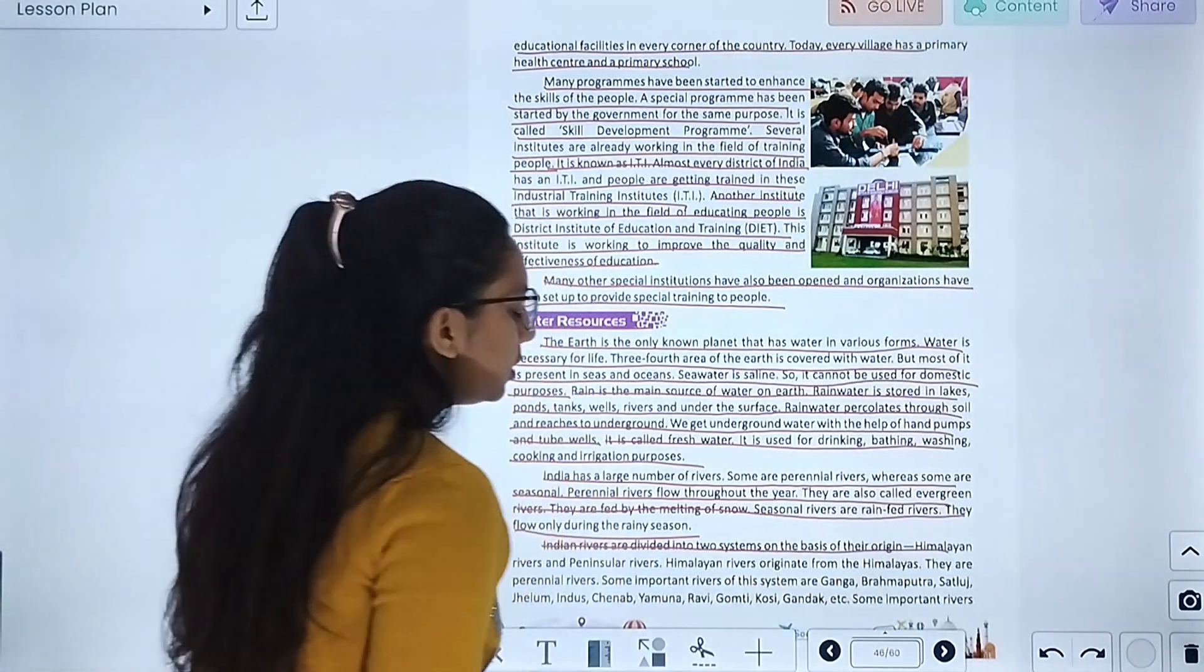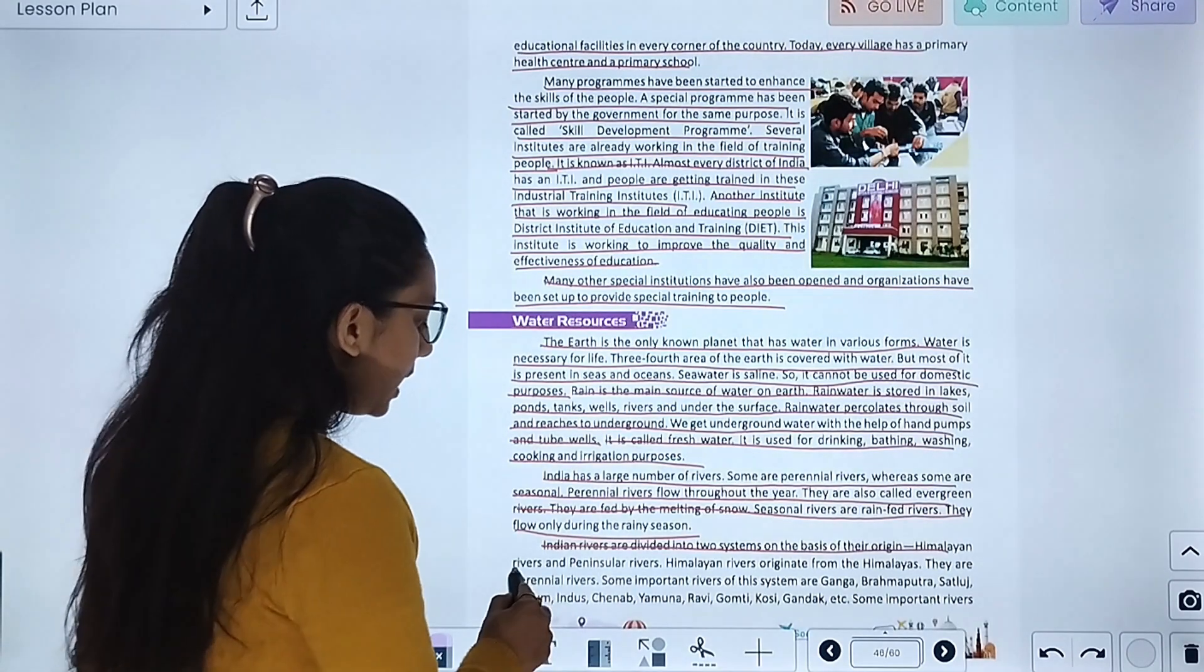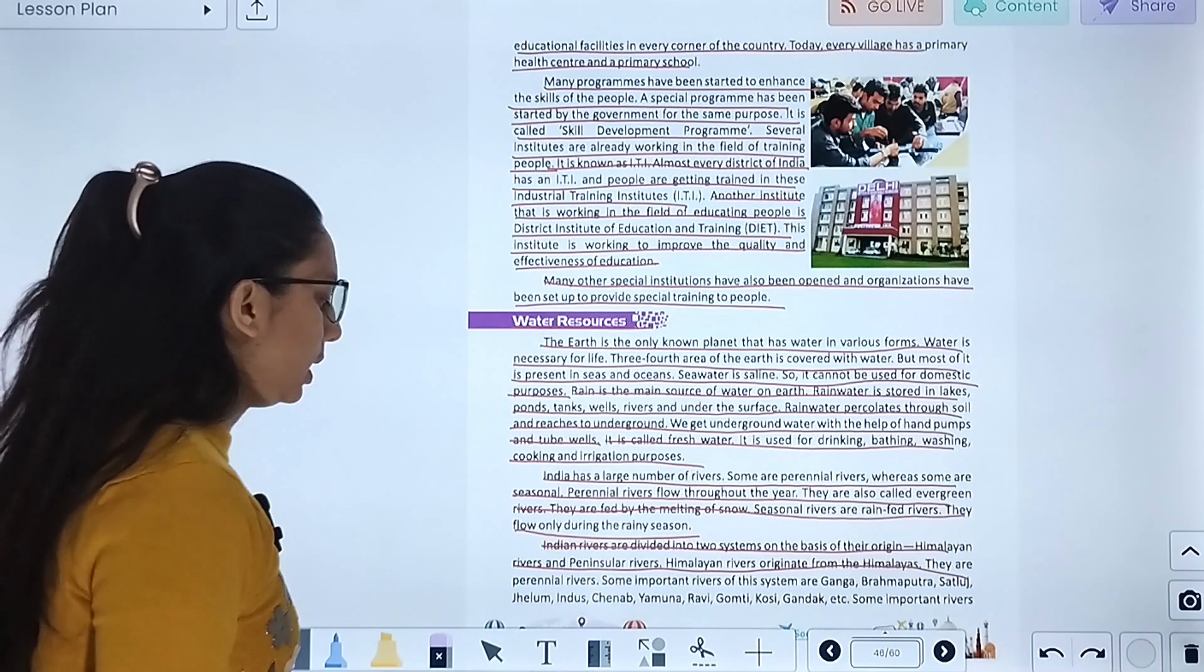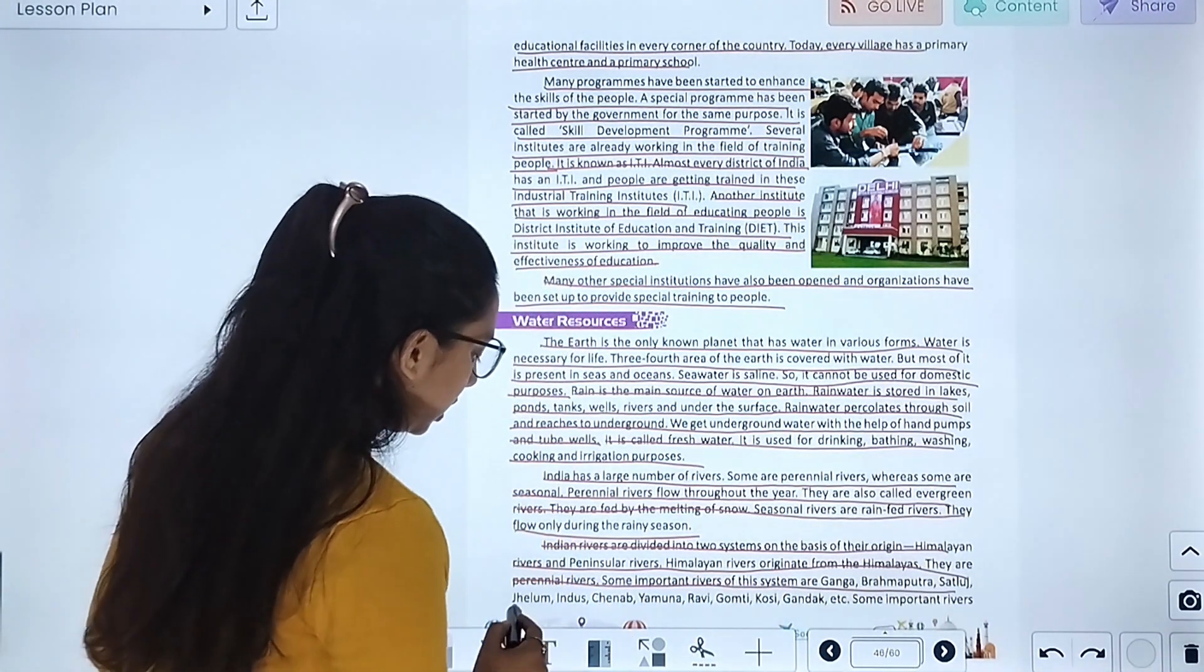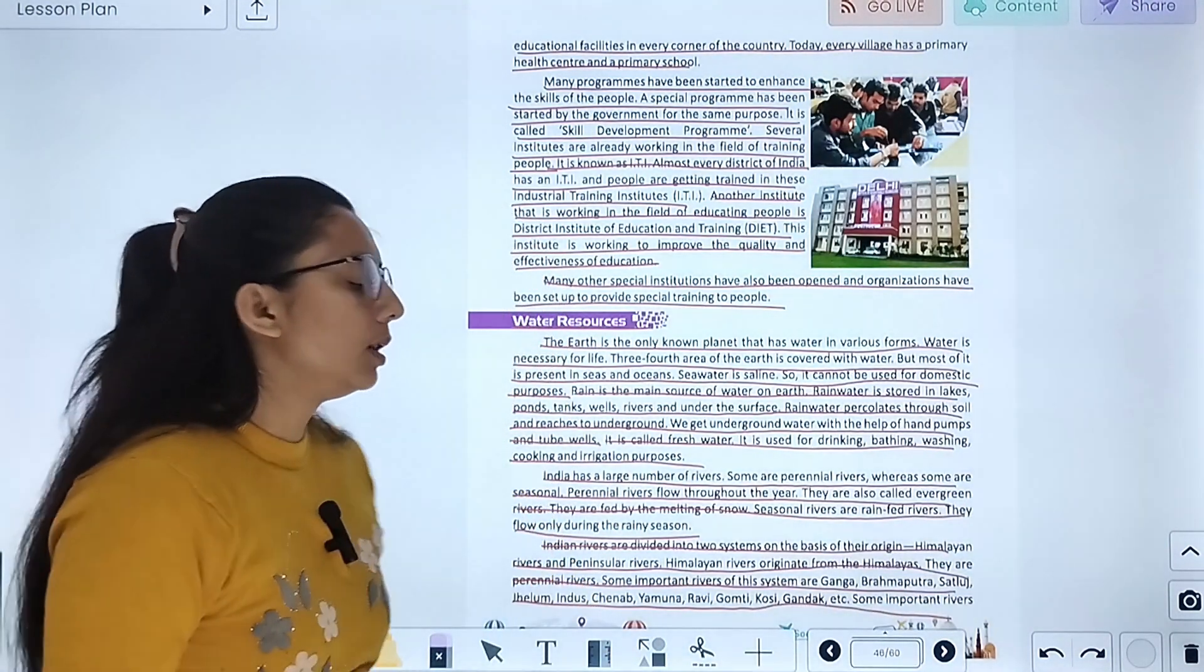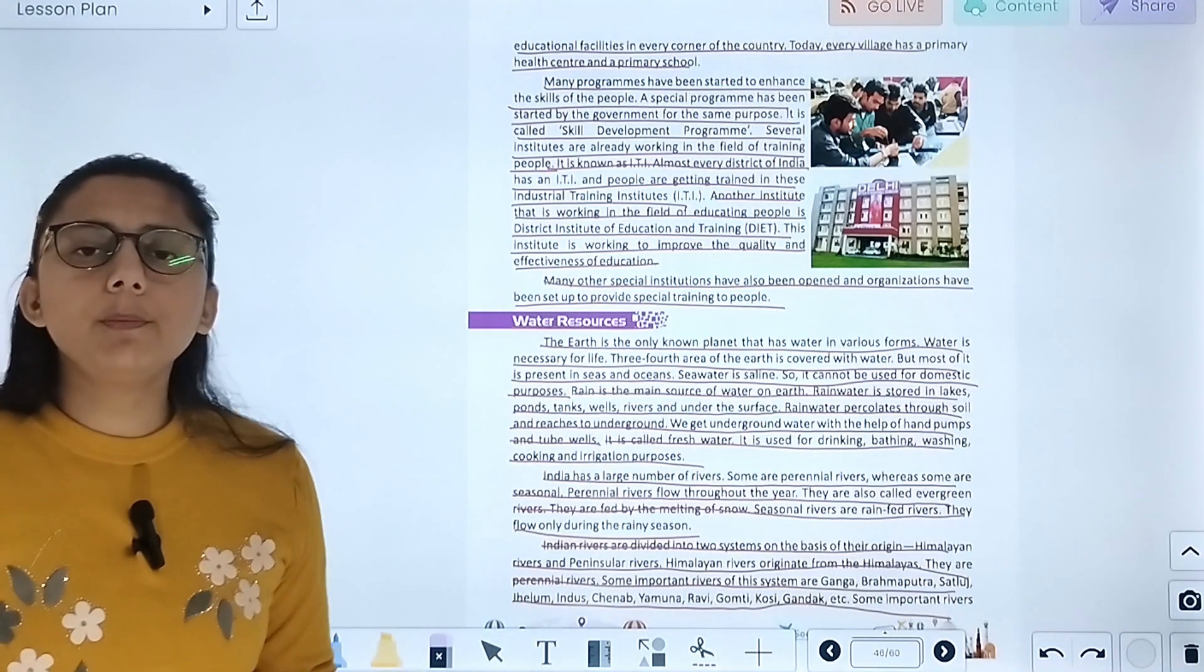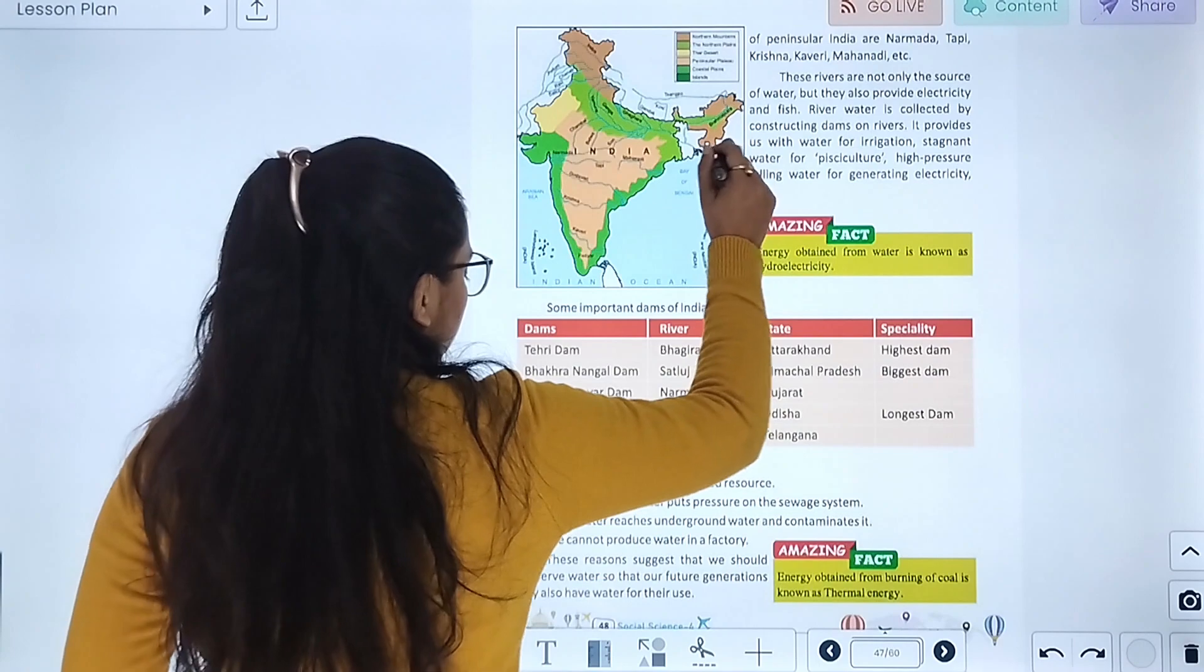Indian rivers are divided into two systems on the basis of their origin: Himalayan river and Peninsular river. Himalayan rivers originate from the Himalayas. They are perennial rivers. Some important ones are Ganga, Brahmaputra, Sutlej, Jhelum, Indus, Chenab, Yamuna, Ravi, Ghaghra, Kosi, Gomti. These all are the Himalayan rivers which are perennial rivers.